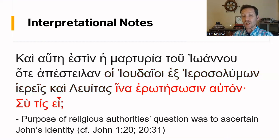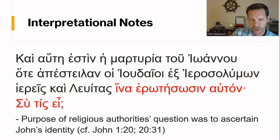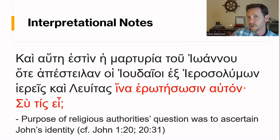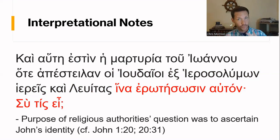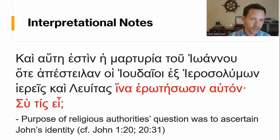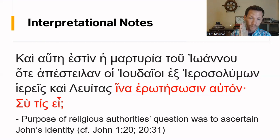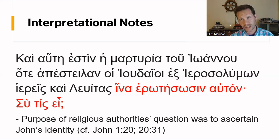The purpose of these religious authorities' question is to ascertain the identity of John — and by extension, Jesus. Check out John 20:31: 'These things are written that you might believe that Jesus is the Christ, the Son of God, and that by believing you might have life in his name.' The book of John begins and ends with this point: the identity of John is that of one who preaches Jesus, and the identity of Jesus is that of the Messiah. That's really the whole purpose of the book, and that's why John's testimony matters.